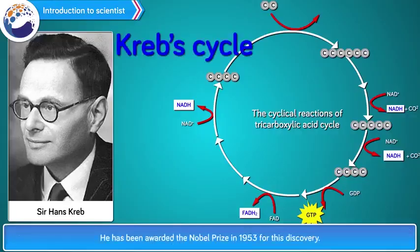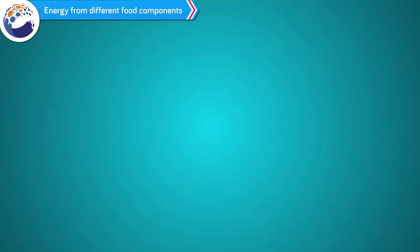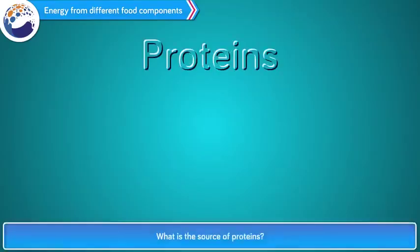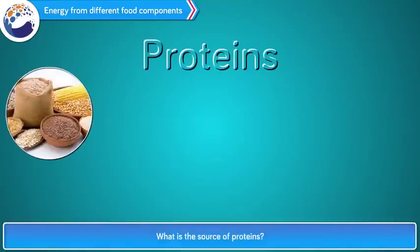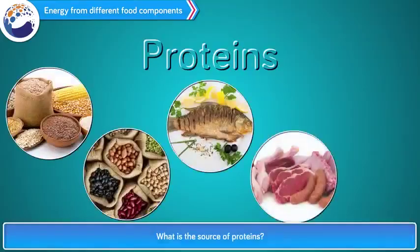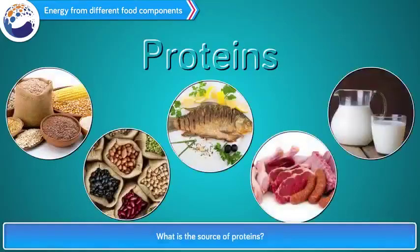Sir Hans Krebs was awarded the Nobel Prize in 1953 for this discovery. Sources of proteins include grains, legumes, fish, meat, and milk.